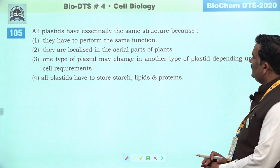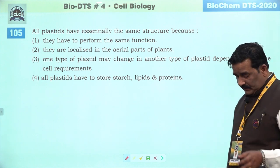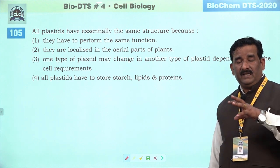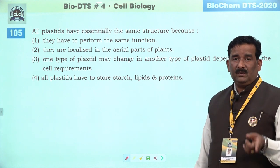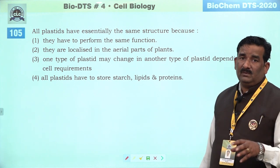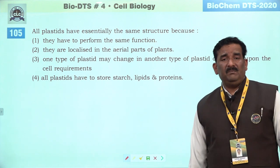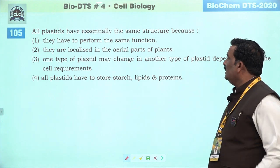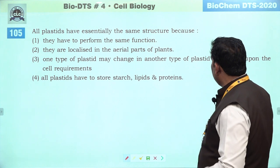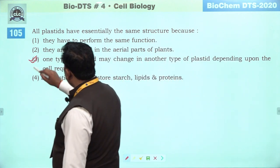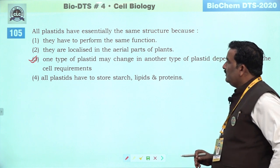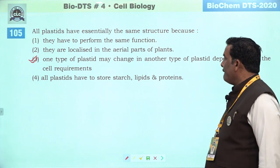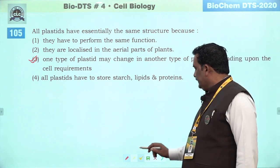Next question: all plastids have essentially the same structure because all plastids are interconvertible. Ek patti pehle red hoti hai phir baad mein green hoti hai. Jo bhi fruit hai jaise tomato hai — initially woh green hote hain, then red ho jaate hain. It means plastids are interconvertible — chloroplast chromoplast mein badal sakta hai. Toh iska jo initial structure hoga woh same hoga. Third jo option hai woh bilkul sahi hai — one type of plastic may change into another type depending on the requirement. Third is the right answer.